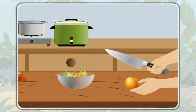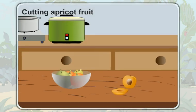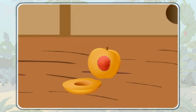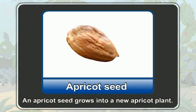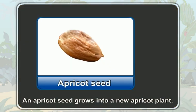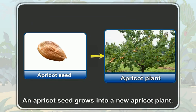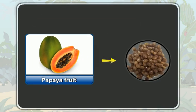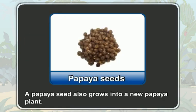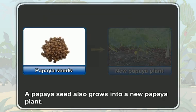Now, let us cut an apricot fruit into two pieces. You can see a hard part inside it, can't you? It is an apricot seed. So, an apricot fruit has the seed inside it. An apricot seed grows into a new apricot plant. A papaya fruit also has seeds inside it. A papaya seed also grows into a new papaya plant.